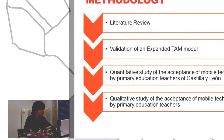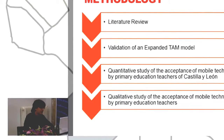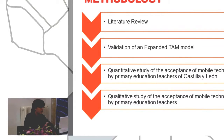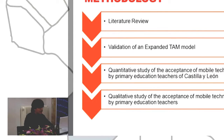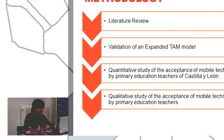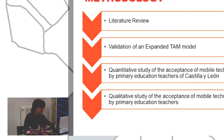The methodology that we are going to follow is divided into four activities. First of all, a literature review — we are going to perform a meta-analysis using a systematic literature review methodology. We are also going to build, validate, and expand the model and its instrument, and after this model is validated, we are going to use it to perform a quantitative study on the acceptance of mobile technology by primary education teachers. This quantitative study will be complemented with a qualitative one within the same context.